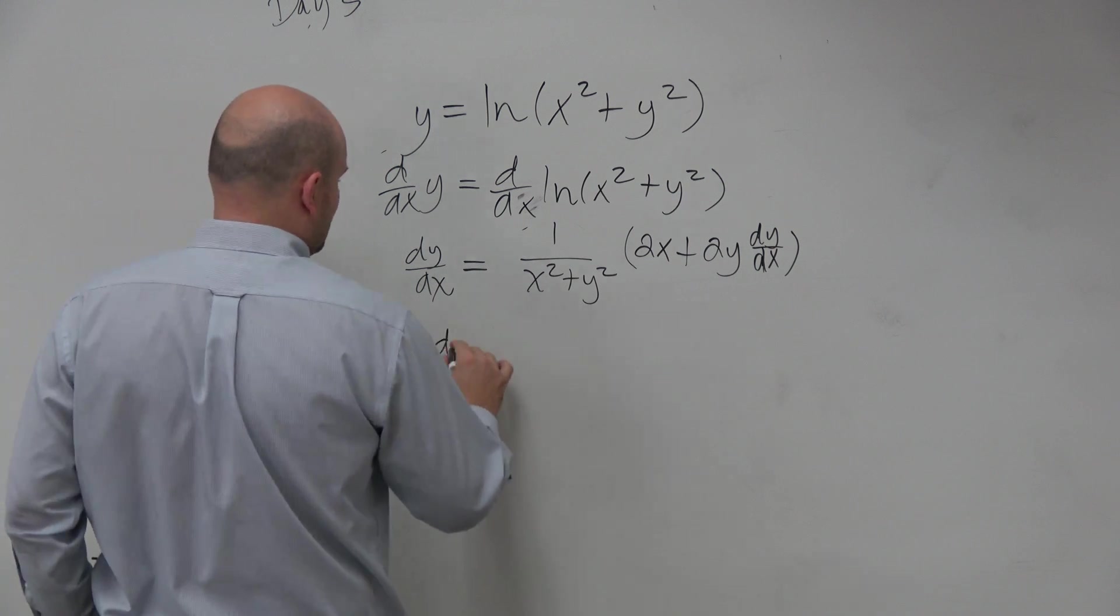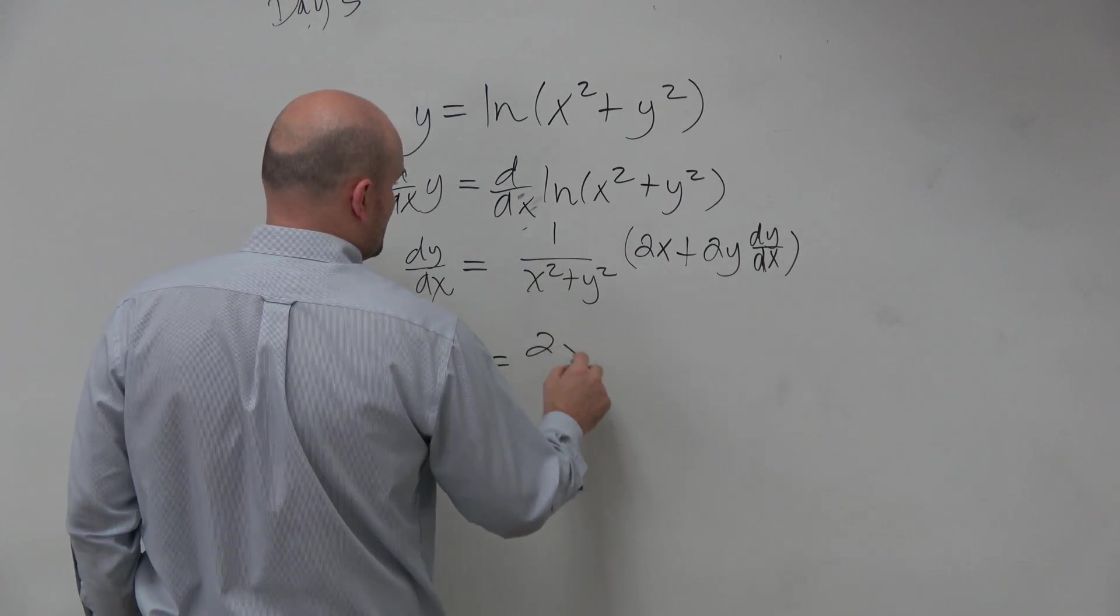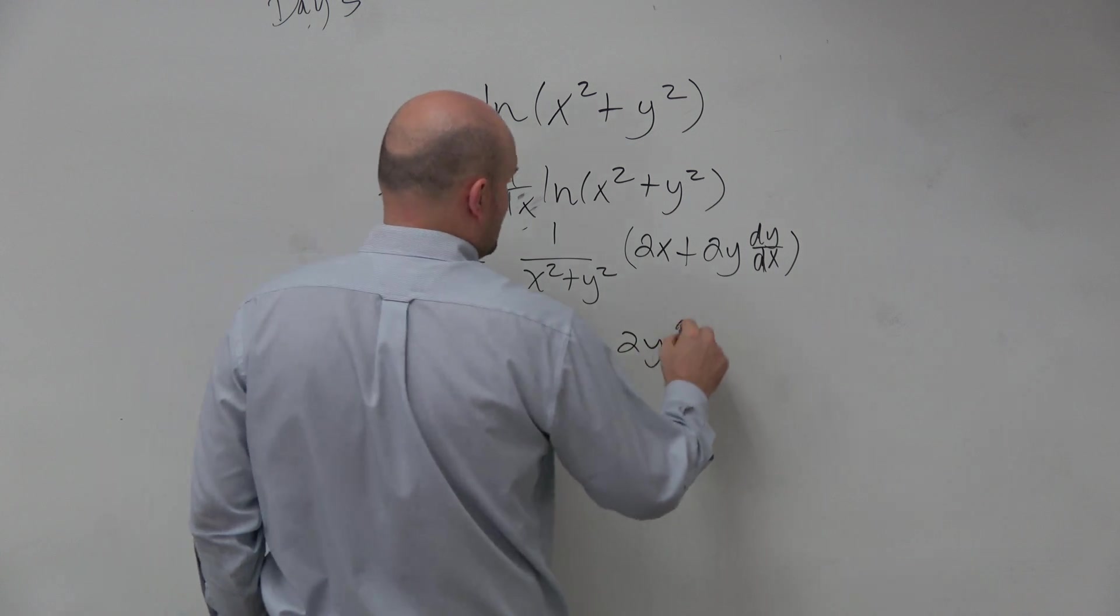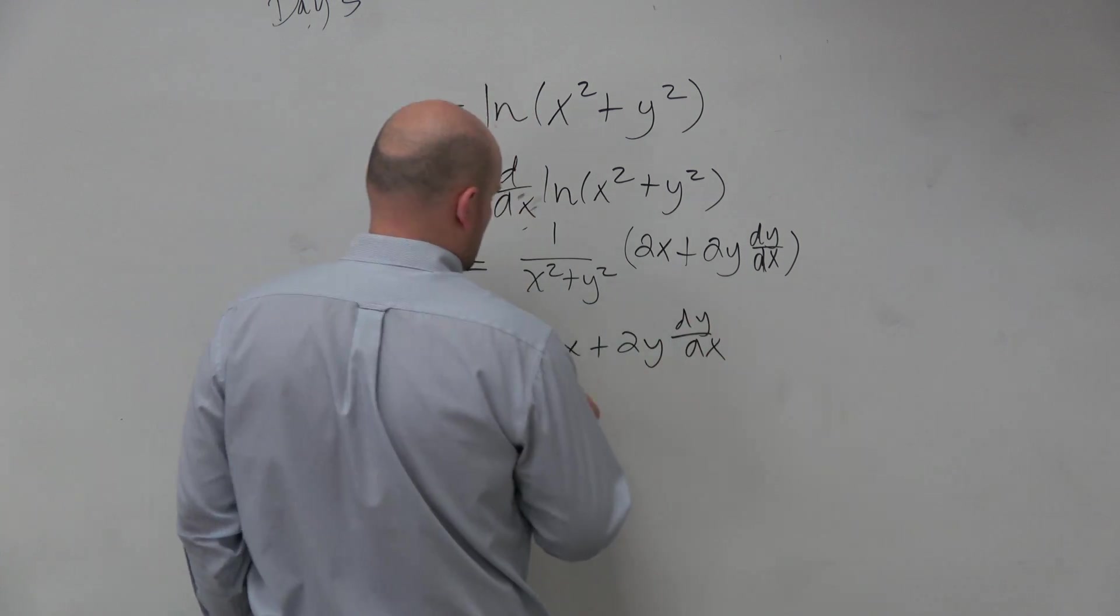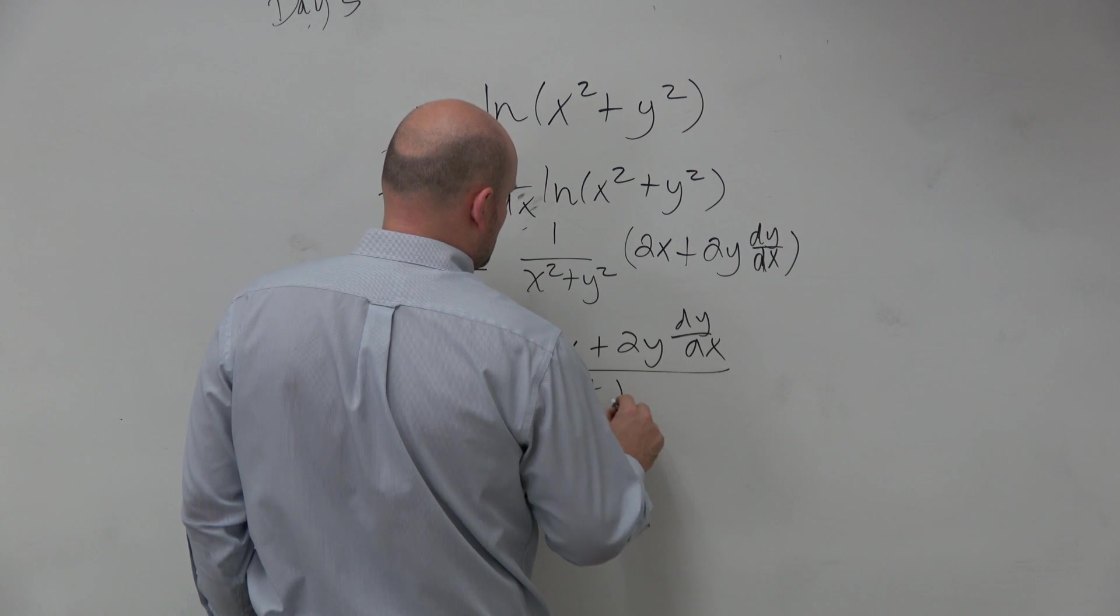So I have dy dx equals 2x plus 2y dy dx all over x squared plus y squared.